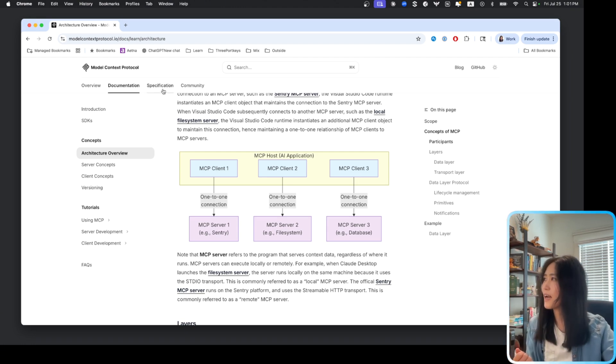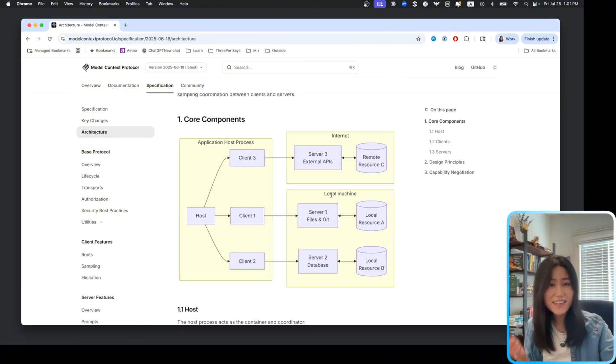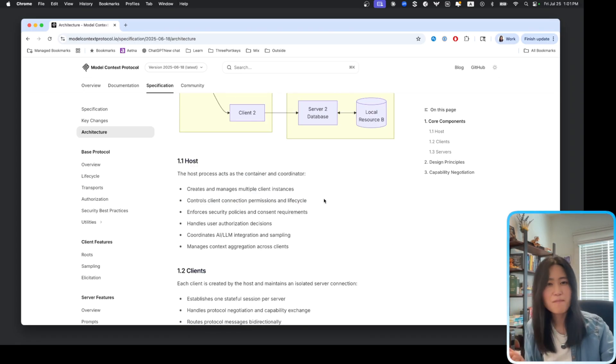But if you look at the specification and look at the architecture here, and let's skip this diagram, you'll probably already see a thousand times. Read carefully about the definition of the host. The host creates and manages multiple clients, control clients, handle user authentication, coordinates AI and large language model integration, manage context aggregation. That sounds a lot like our backend service.